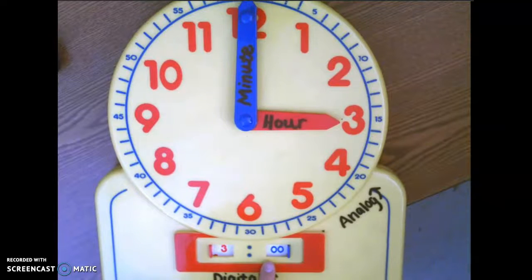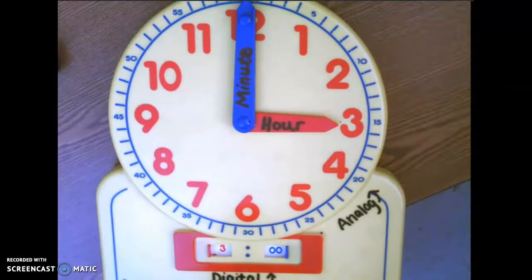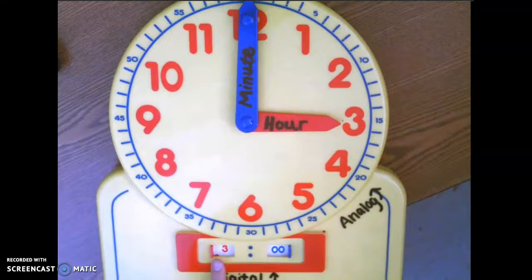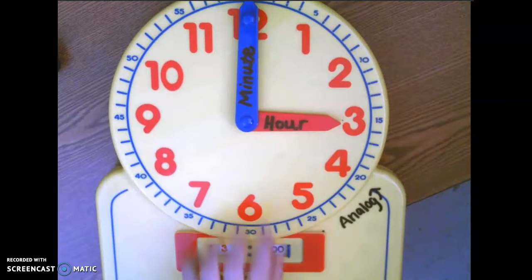And the blue represents how many minutes have passed. We have zero, zero because we're at the top of the three o'clock hour and zero minutes have passed. So we say three o'clock. Can you say that? Three o'clock. Good job.